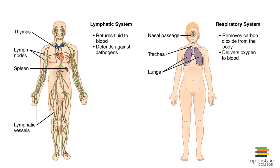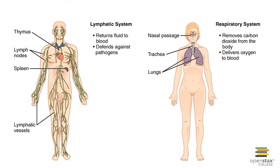The respiratory system is composed of the lungs, trachea, larynx, and nasal passages. This is where we have the exchange of respiratory gases like oxygen and carbon dioxide between the air and circulating blood. The muscular system is composed of muscles attached to the skeleton, which provide locomotion, support, and body heat production.